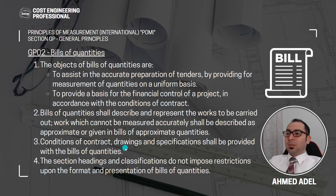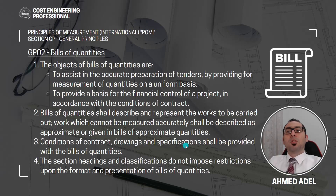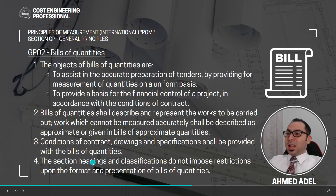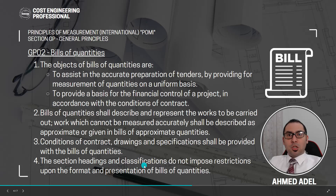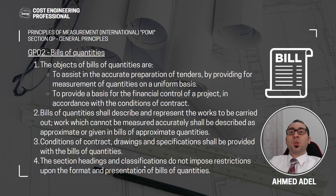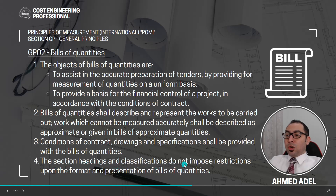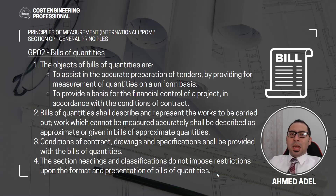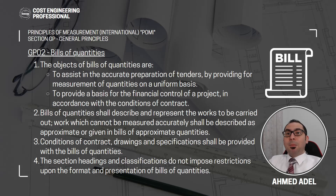Conditions of contract, drawings, and specifications shall be provided with the bill of quantities. Point four: the section headings and the classification do not impose restrictions upon the format and presentation of bill of quantities. They have given us section headings like concrete works, masonry works, metal works, but these headings do not impose restrictions. It's okay to make some changes - for example, instead of 'doors and windows' you can say 'openings' - but you have to state this in the appendix.